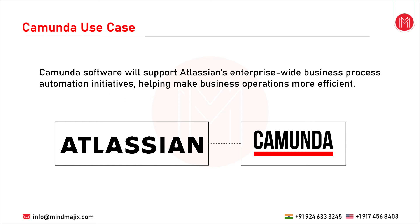Several additional projects will follow, including process automation for Salesforce lead management and routing customer support cases. Atlassian selected Camunda for its high-throughput performance, ability to support collaboration among IT and business users, and interoperability with a wide variety of development environments including Java, Python and Node.js. Camunda's flexible deployment options align with Atlassian's requirements, providing Spring Boot and embedded deployment strategies as part of Atlassian's microservices architecture.